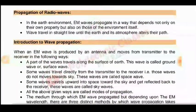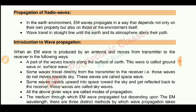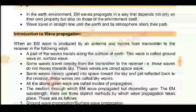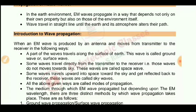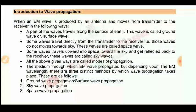Propagation of radio waves is the main topic of this unit. The EM wave travels through Earth's environment — for example, from a transmitter to a mobile device. Its propagation depends not only on properties like frequency and wavelength, but also on the environment. Generally, EM waves travel in a straight line, but alterations in their path occur due to the Earth and the atmosphere.